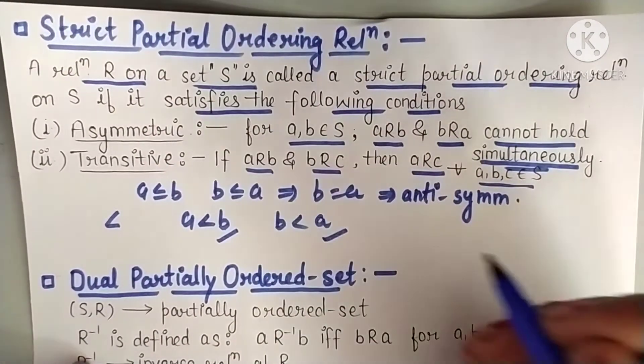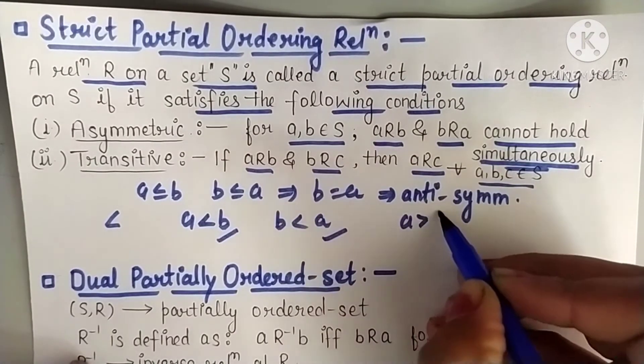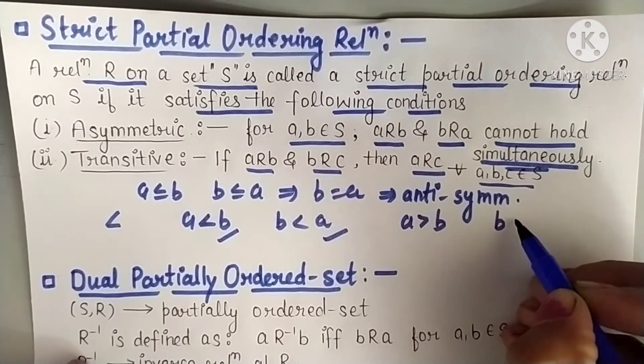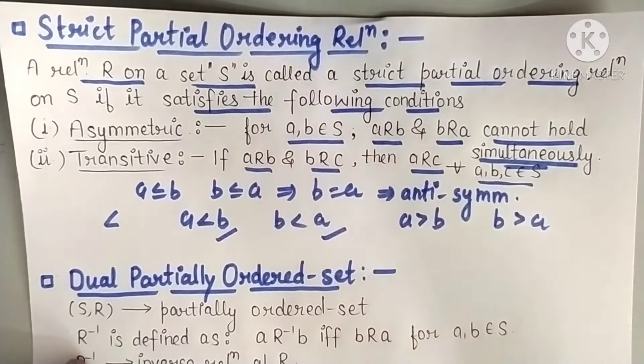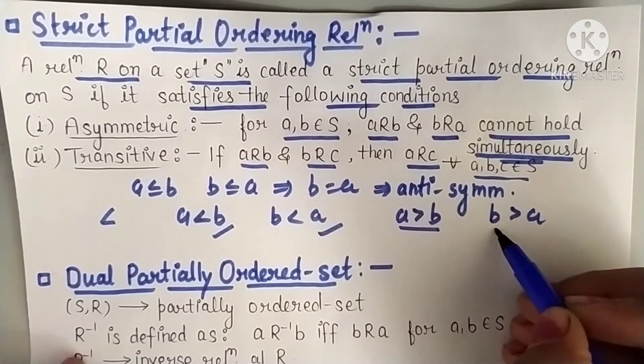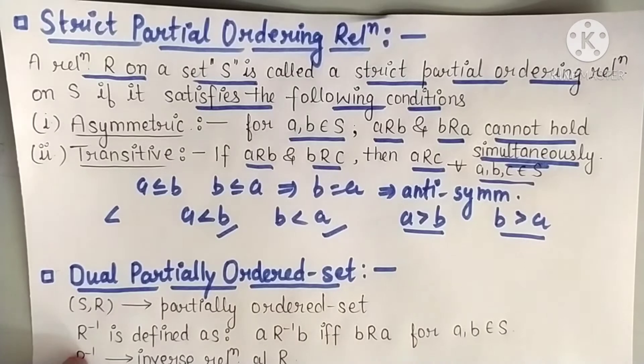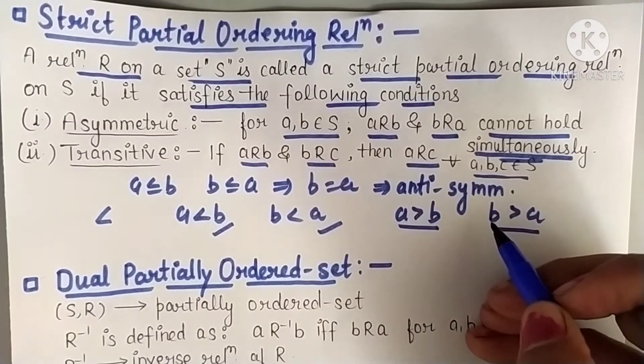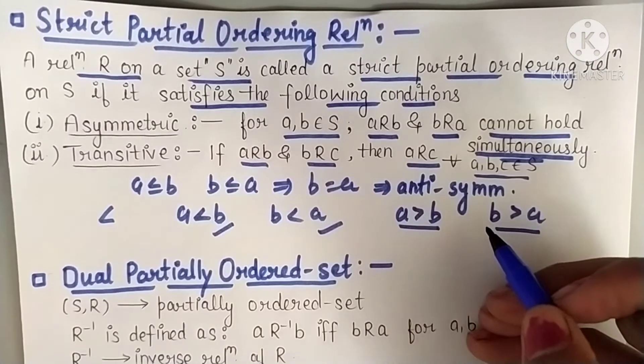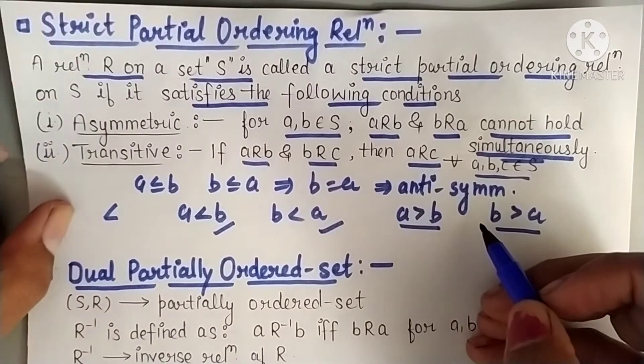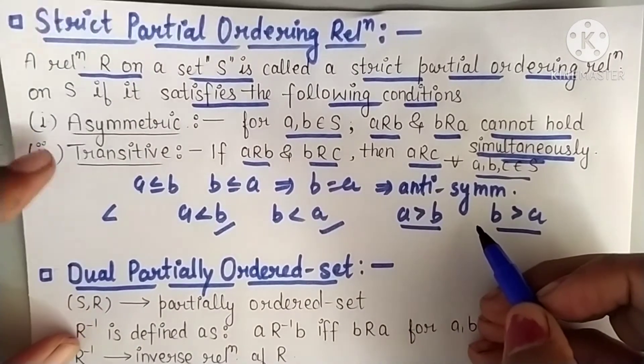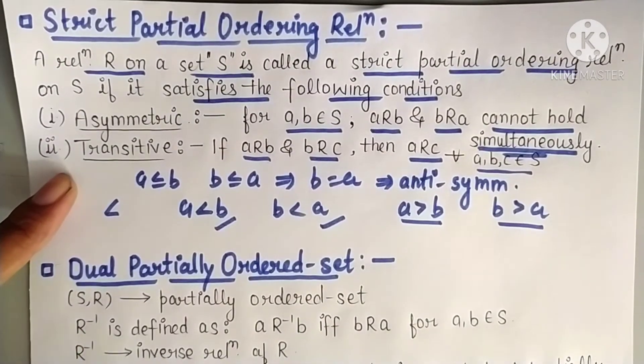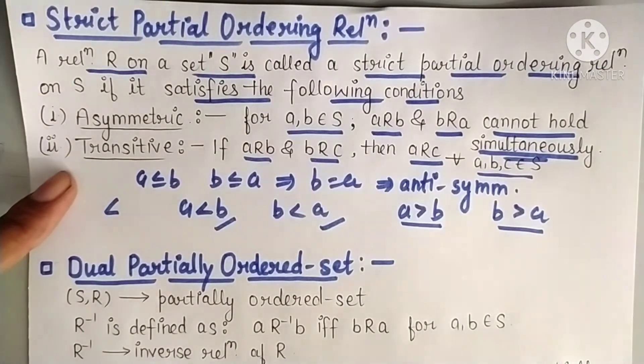Similarly if I take greater than also, if I say a greater than b and b greater than a, this is not possible. Simultaneously either a is greater than b, at a time one condition will hold. So this type of condition is called asymmetric. So any relation which is asymmetric and transitive, that relation is called strict partial ordering relation.